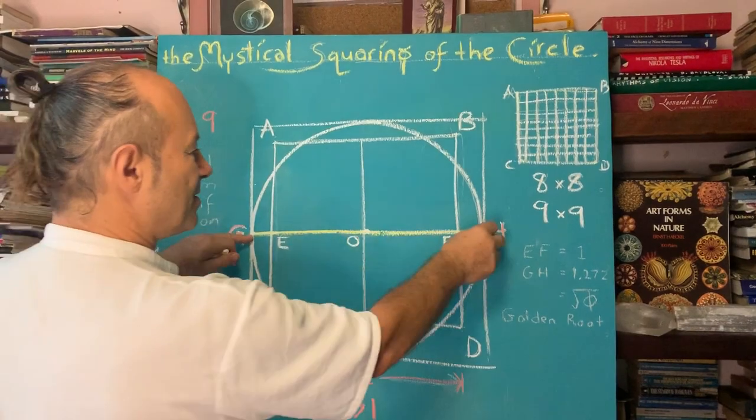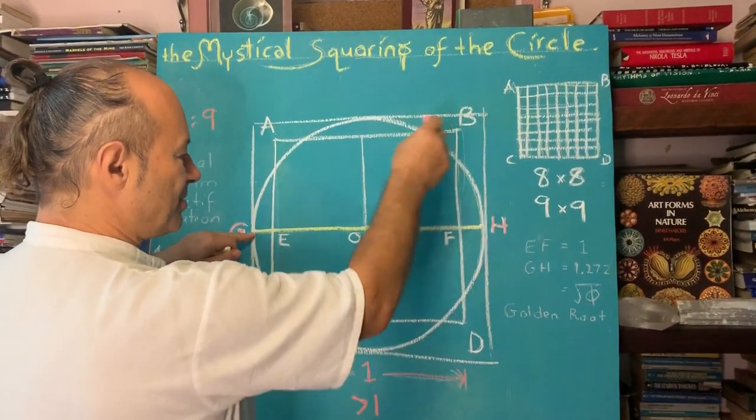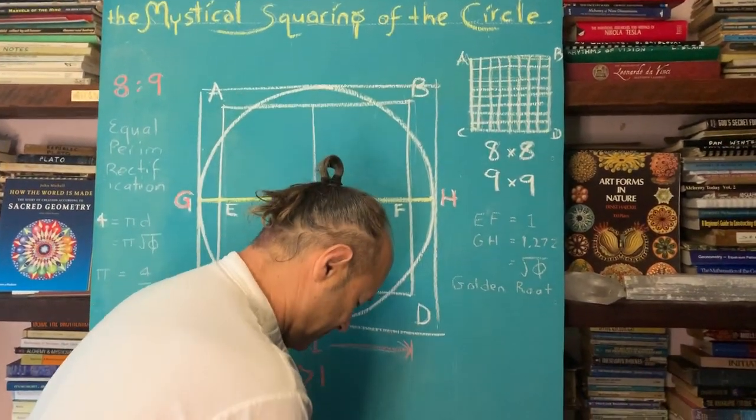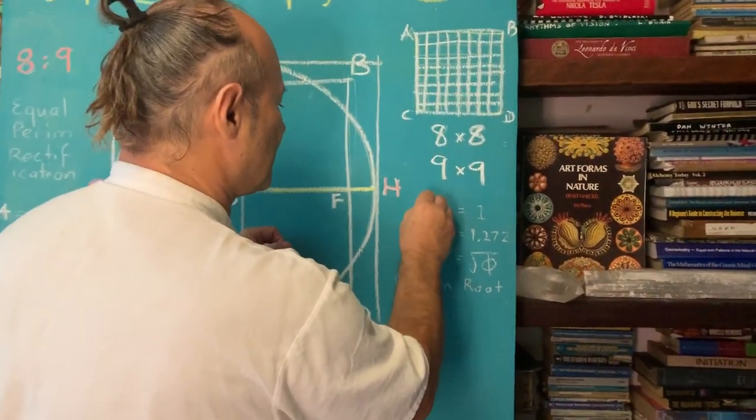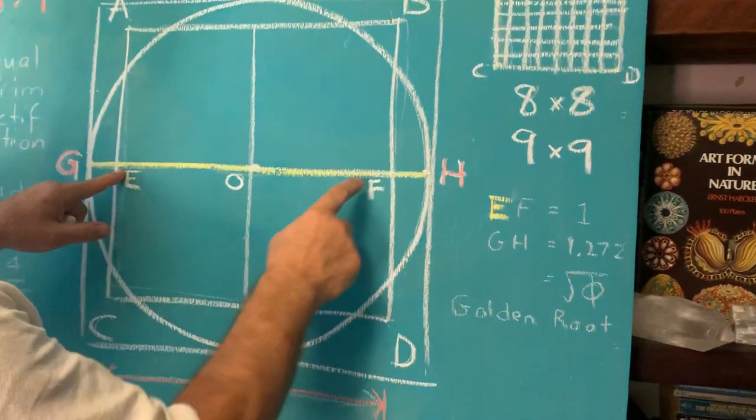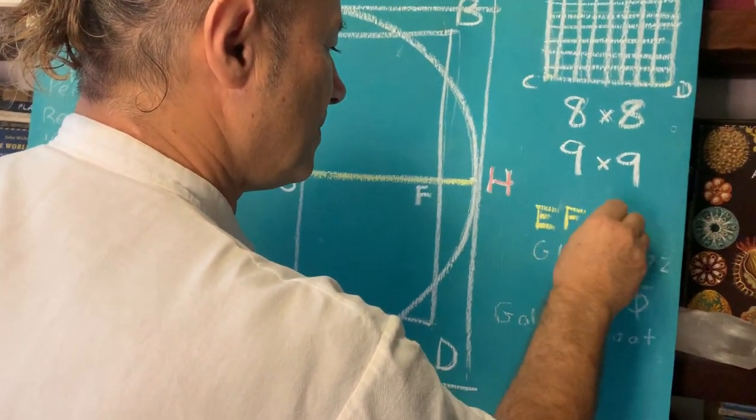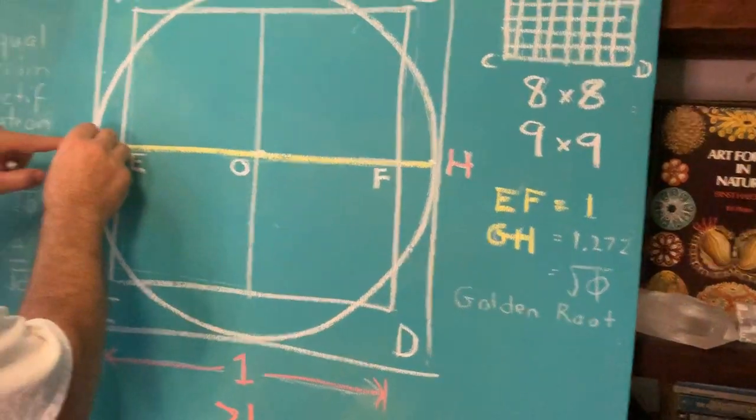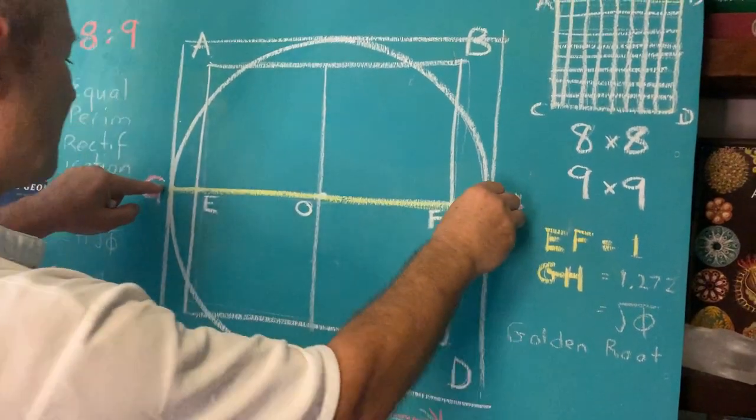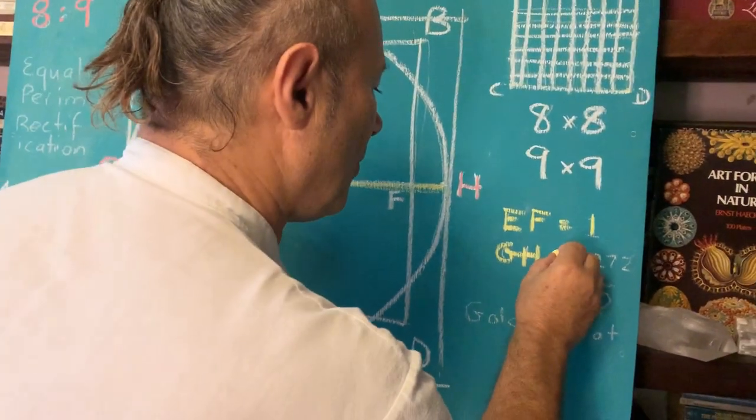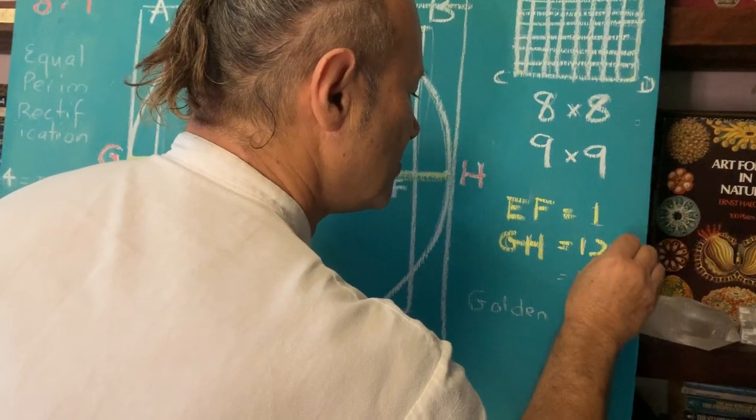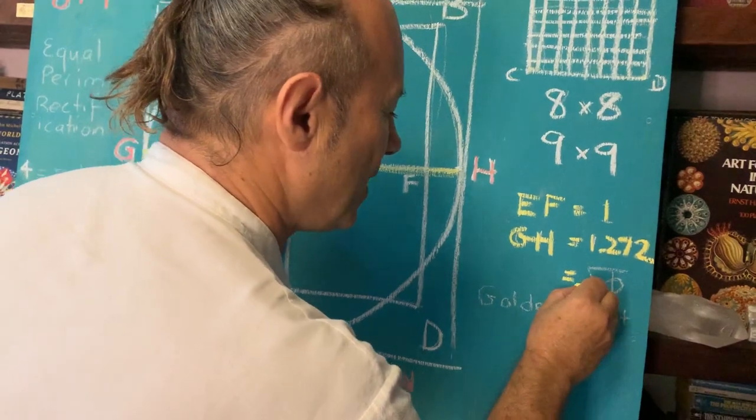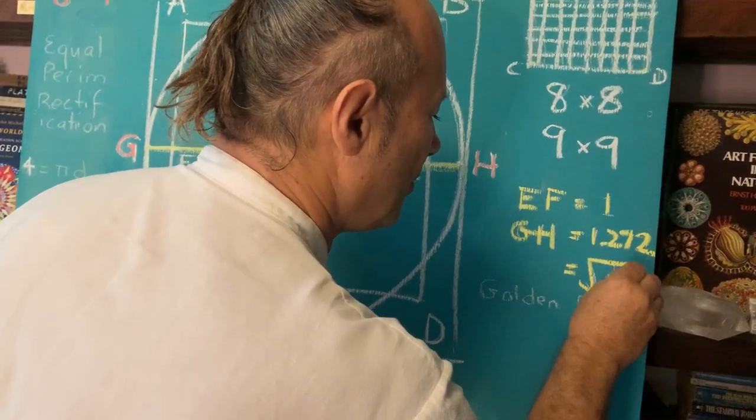And after a little bit of calculation, which we don't have the time to do now, it's established that the diameter of this larger circle now is, let's write this down. So we'll say that EF, the square, EF to there, which is in the square, equals 1 unit. But GH, the extrapolated length of the square, is a bit more than 1, and it's called 1.272.